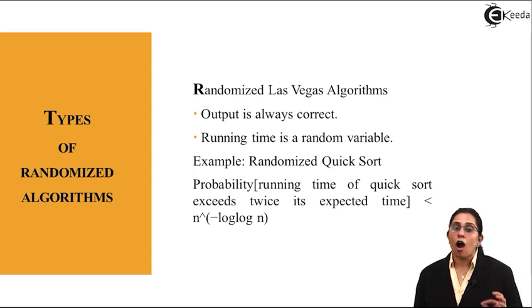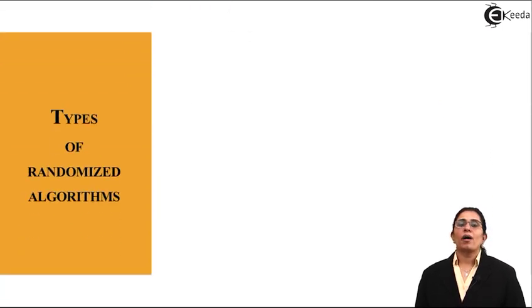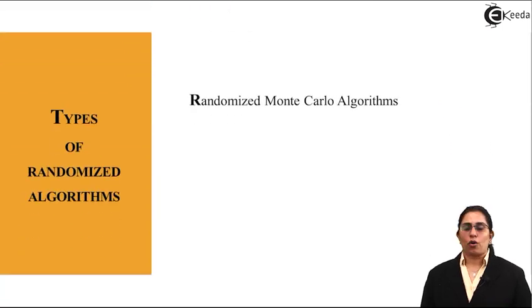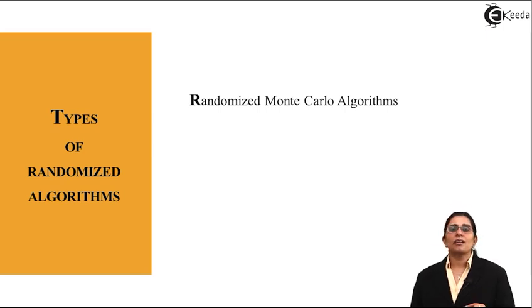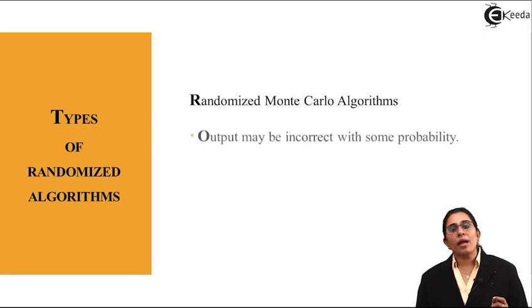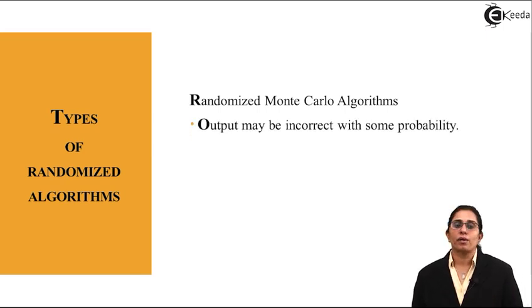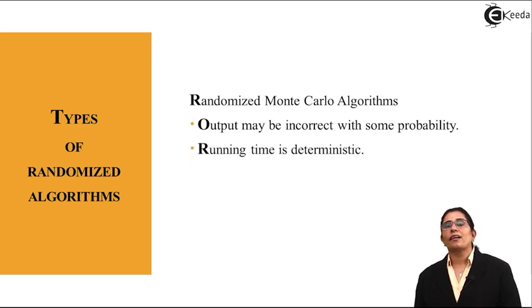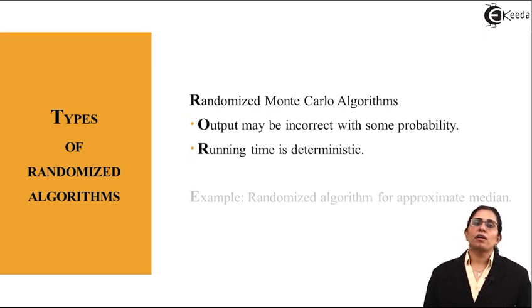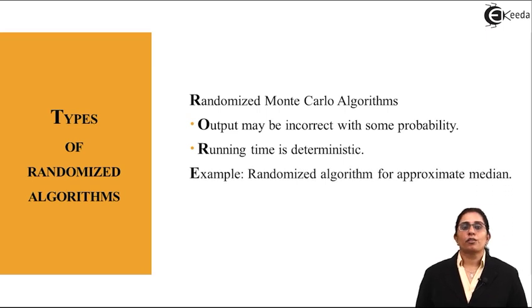And the second one is a randomized Monte Carlo algorithm. It is a little less efficient than the Las Vegas as the output may be incorrect with some probability and the running time is deterministic. The example is the randomized algorithm for approximate median.